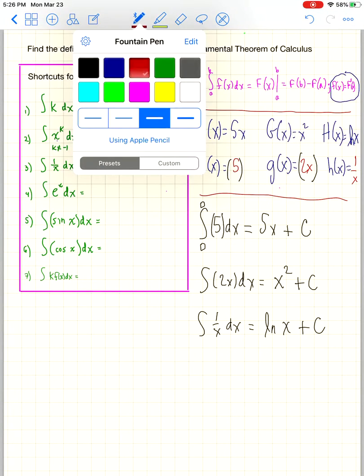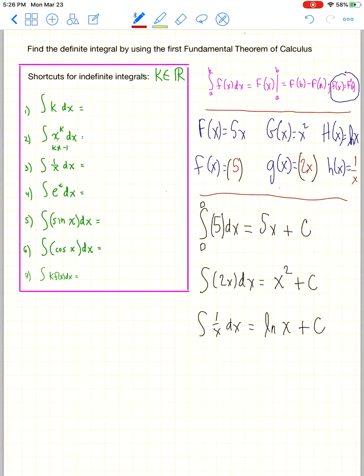So that means you can go back here and start to fill in the shortcuts now. The integral of a constant is a constant times x plus c because the derivative of a number times x is always the number.